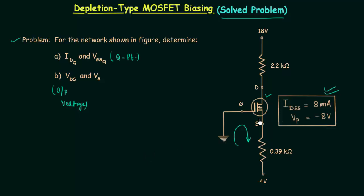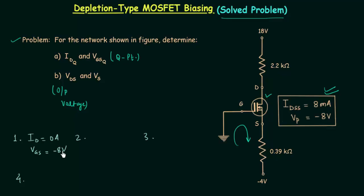We will plot the transfer curve for IDSS equal to 8mA and VP equal to minus 8V. We need four points for the transfer curve. In the first point the drain current ID is equal to 0A, and when you put ID equal to 0A in Shockley's equation you get VGS equal to minus 8V. In the second point VGS is equal to VP over 2, which is minus 4V, and for this we get the drain current equal to IDSS over 4, which is 2mA.